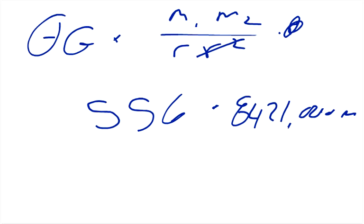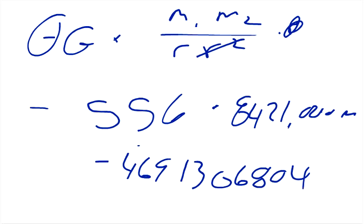and it will give us, of course it has to be negative, we have to throw in a negative in there, and it will give us our potential energy of negative 4,691,306,804 joules, so negative joules is the potential energy.